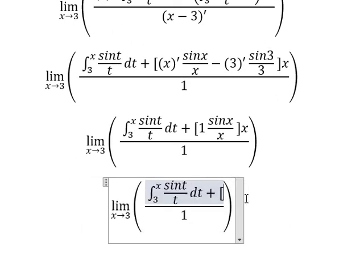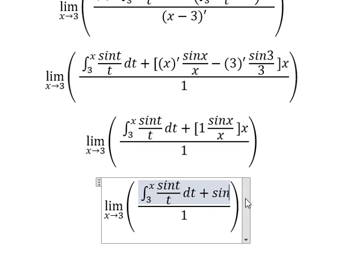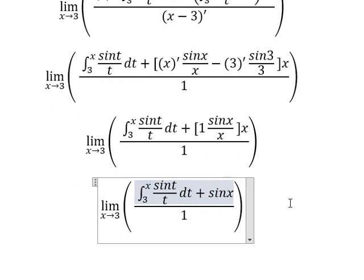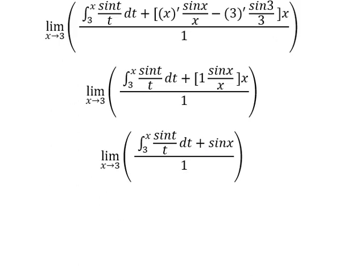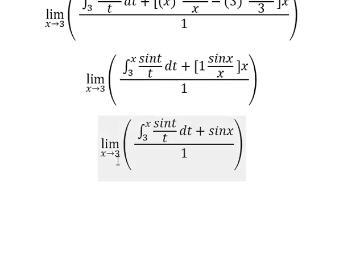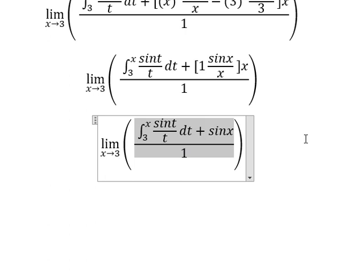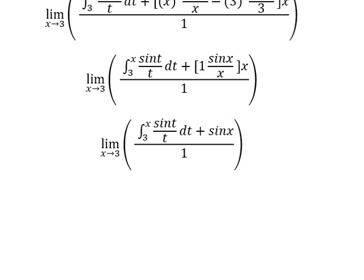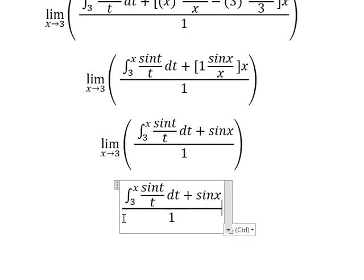So we have sin(X) divided by X, which simplifies to sin(X). Now we substitute number three in here and here, and we can get the final answer.